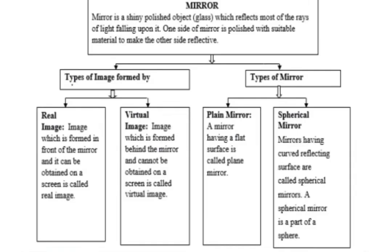Now we are going to study about mirrors through which reflection of light takes place. A mirror is a shiny polished object which reflects most of the rays of light falling upon it. One side of the mirror is polished with suitable material to make the other side reflective. There are two types of mirrors: plane mirror and spherical mirror. A plane mirror is a mirror having a flat surface, and mirrors having curved reflecting surfaces are called spherical mirrors. A spherical mirror is a part of a sphere, and we are going to study spherical mirrors in detail.